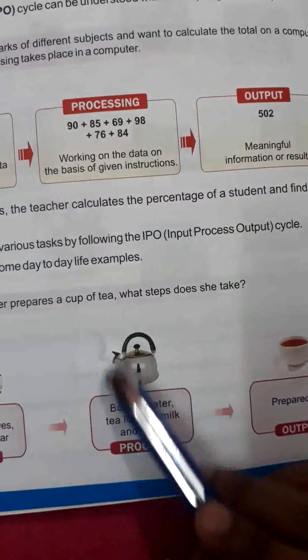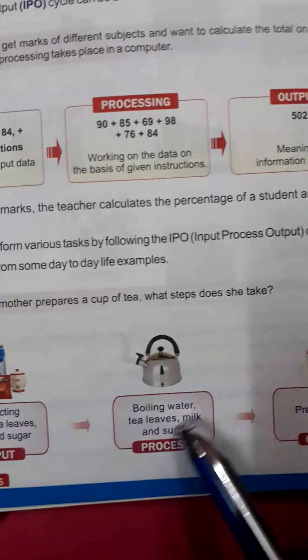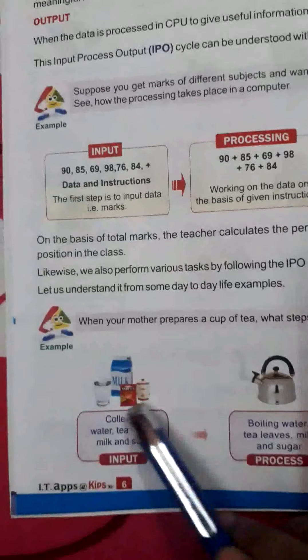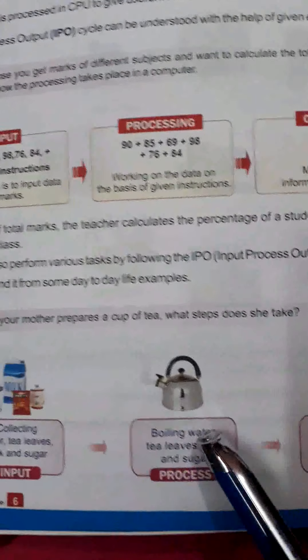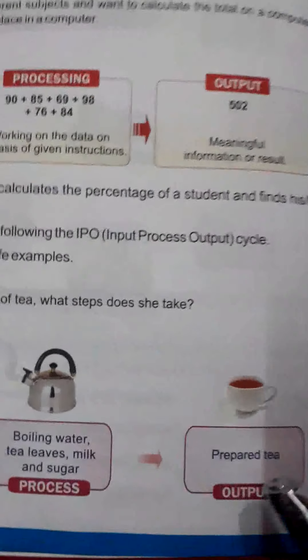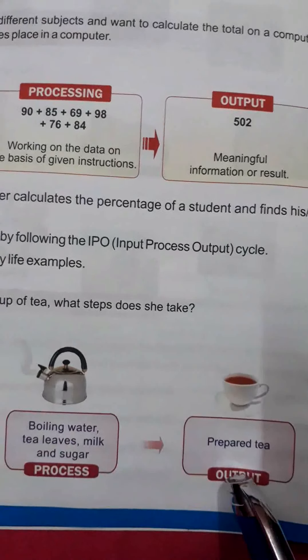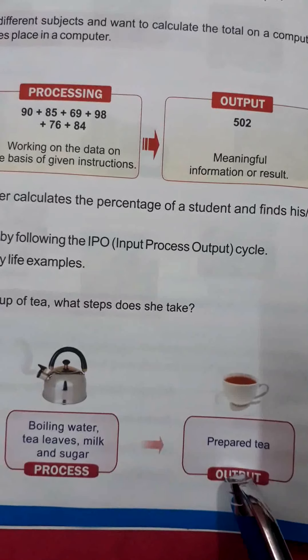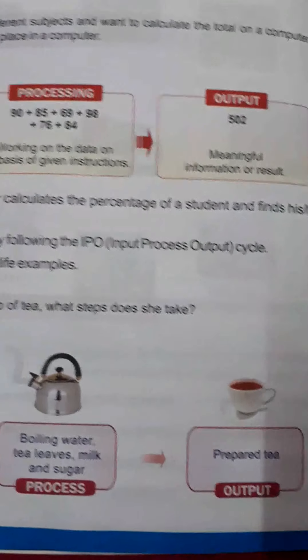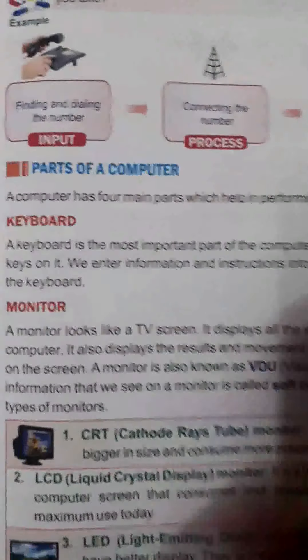Then she boils the water, tea leaves, milk, and sugar together — this is the processing stage, just like a computer processes data. After processing, the prepared tea is the result — chai ban gayi hai, it's ready. That is our output.